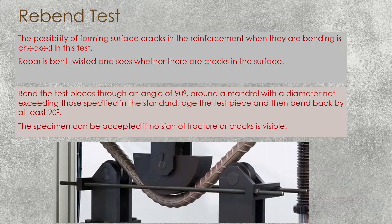Re-bend test: the possibility of forming surface cracks in the reinforcement when bending is checked in this test. We bend the reinforcement and visually observe whether there are cracks on the surface. The test piece is bent to an angle of 90 degrees around a mandrel with a diameter not exceeding that specified in the standard, then re-bent back by at least 20 degrees.